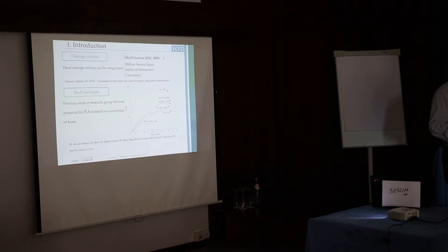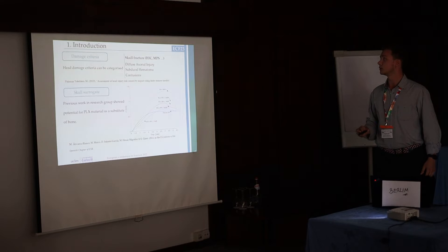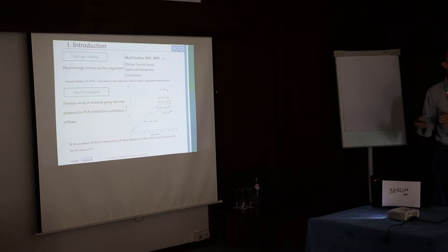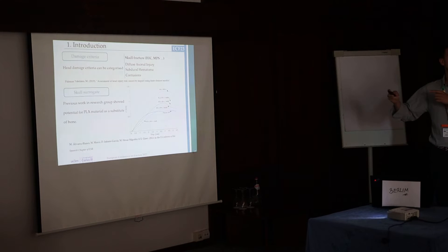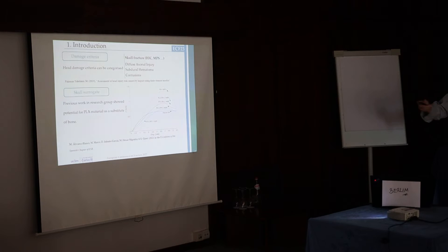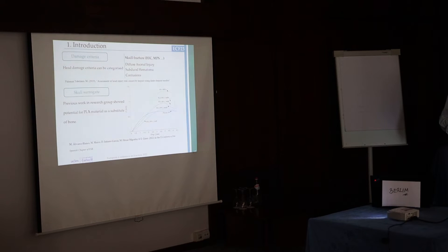Some previous work in the research group and collaborators presented head damage criteria, and here I am showing the different possibilities to study when focusing on head impacts and head surrogates. We are trying to focus right now on skull fracture. This is the preliminary stage of our research, and the different criteria we can use include the head injury criteria, maximal principal stress, etc. In order to simulate skull fracture, we are trying to develop first the skull surrogate, which will serve as the principal object on which we will continue to develop the complete head surrogate. Previous work in these research groups showed some potential for PLA material as a substitute for bone tissue, with very similar properties depending on the different manufacturing strategies. So we decided to select that material and move forward.